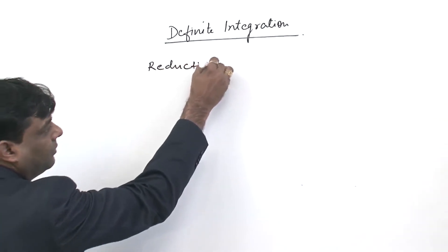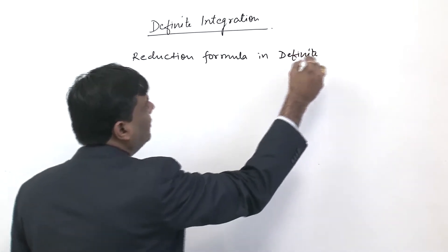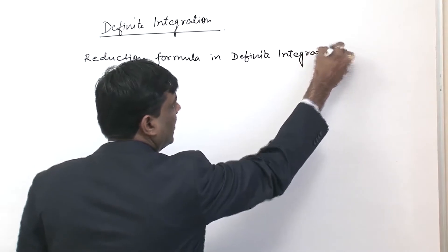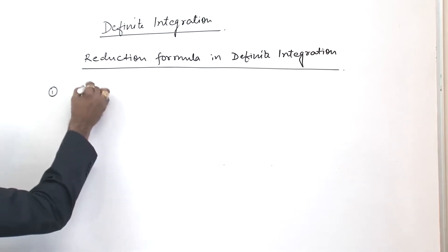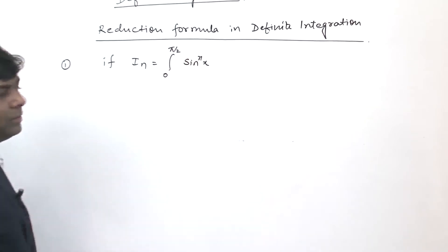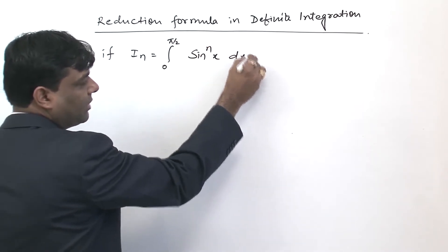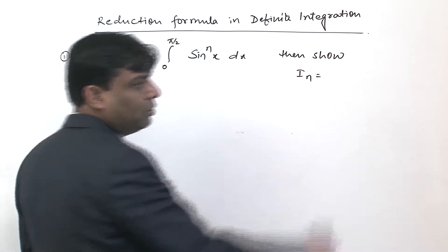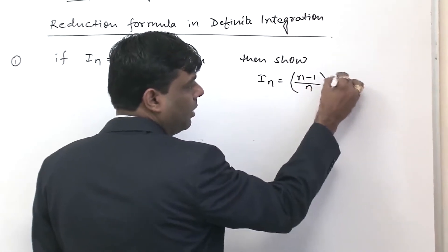Reduction formula in definite integration. In particular, if I_n is equal to the integral from 0 to π/2 of sin x to the power n dx, then show that I_n is equal to (n minus 1) upon n times I_{n-2}.